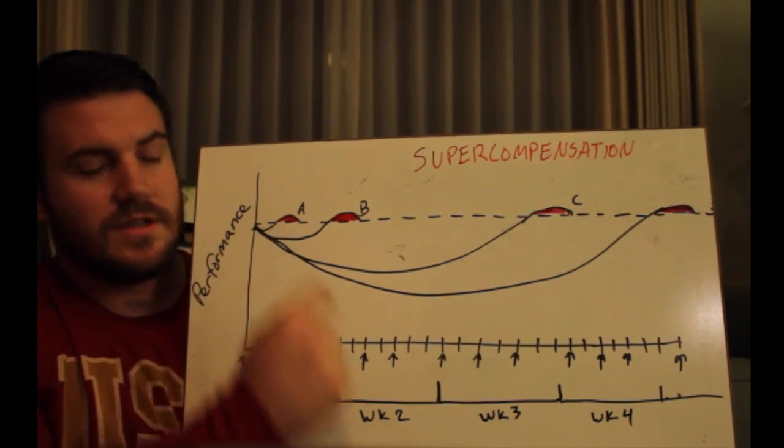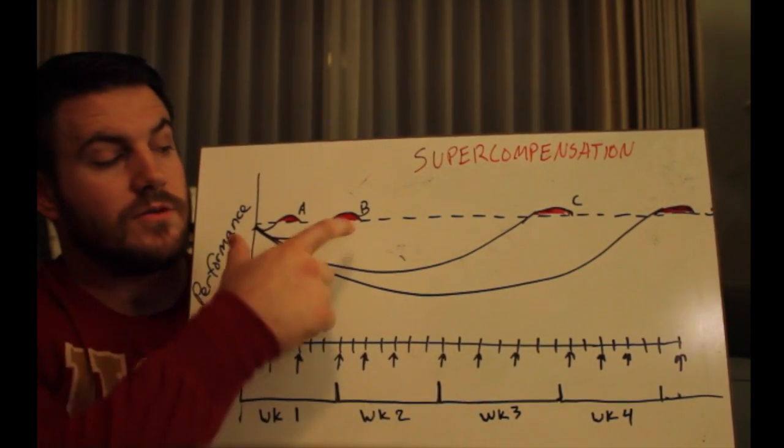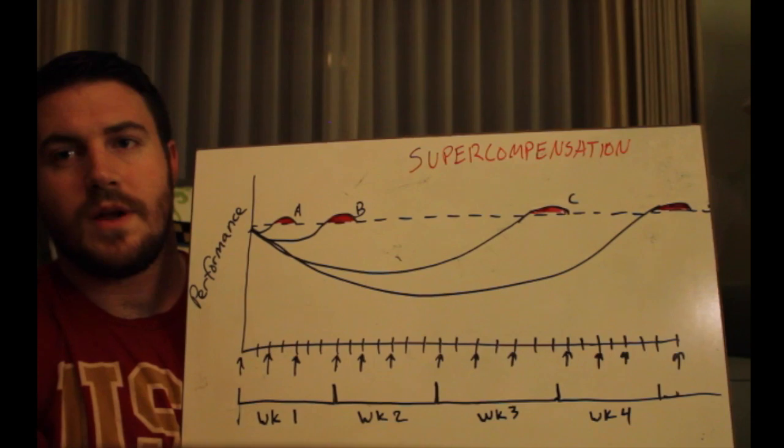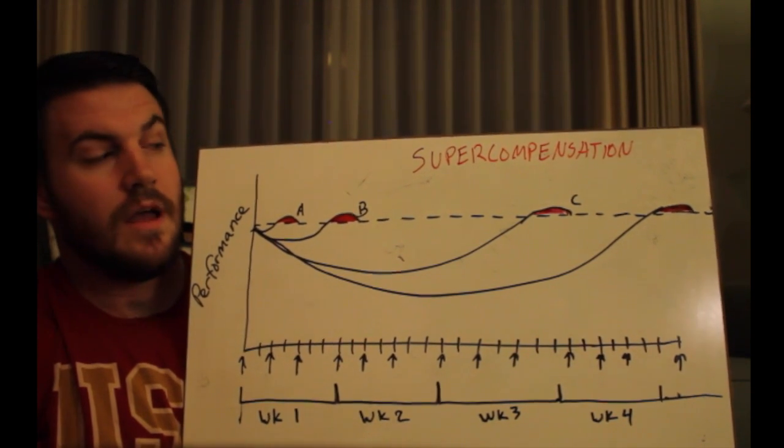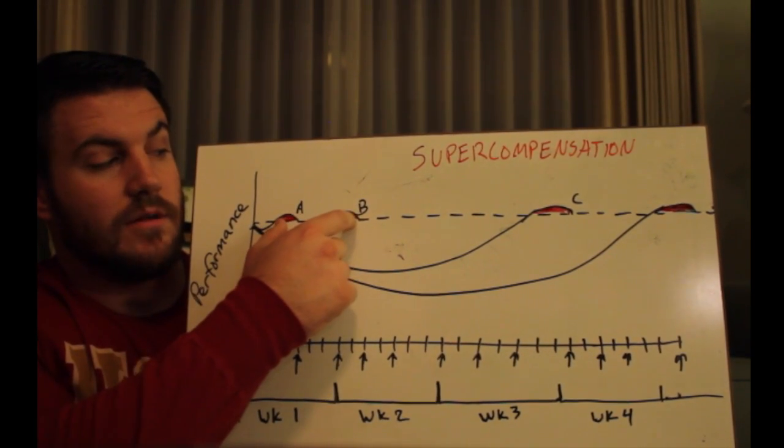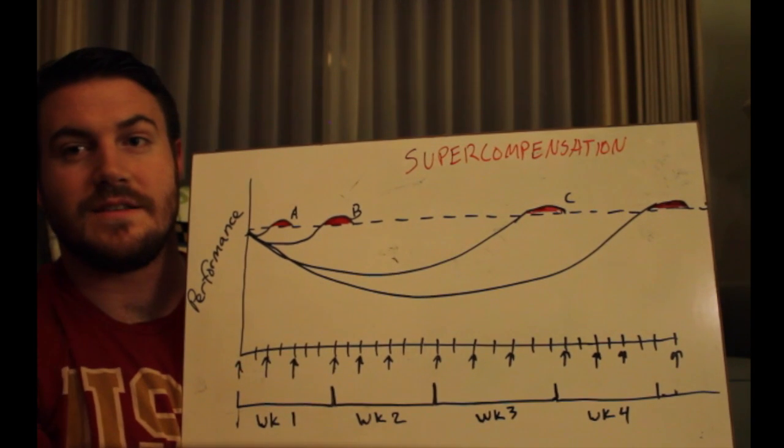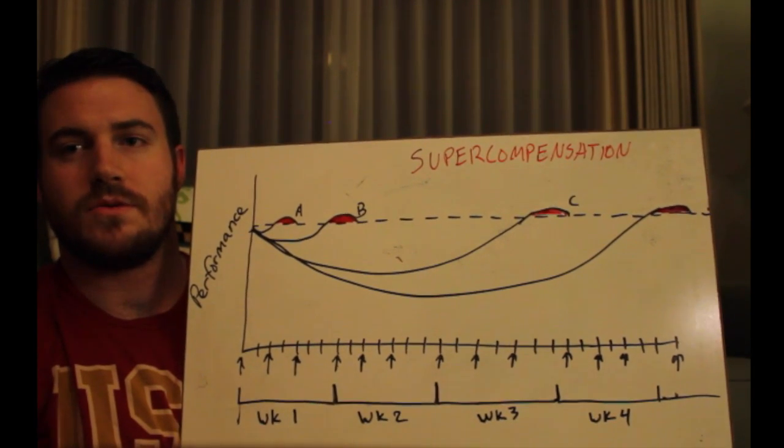But the intermediate and the novice don't have to worry about that. Their microcycle is short, therefore their training does not have to be very complex. So they can stay on the microcycle level, whereas advanced athletes need to start thinking about the mesocycle.